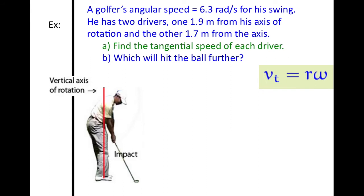A golfer's angular speed is 6.3 radians per second for his swing. He has two drivers and wants to find the tangential speed for each. Driver one is 1.9 meters long from his axis of rotation, and the other is 0.2 meters shorter — so 1.7 meters. Use the equation V sub T = R × omega and plug in the values for each driver.